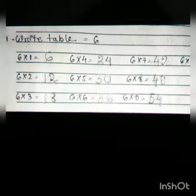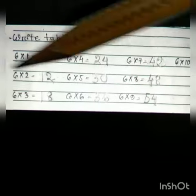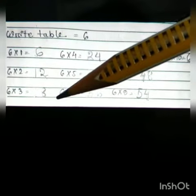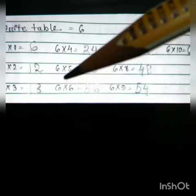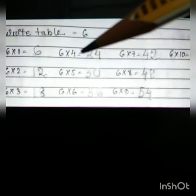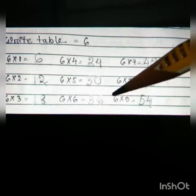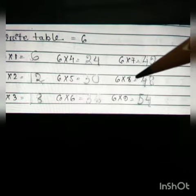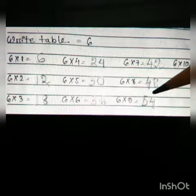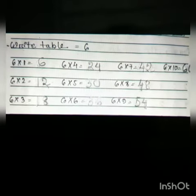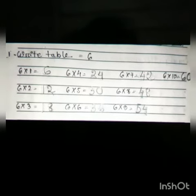We read it one more time. 6 ones are 6, 6 twos are 12, 6 threes are 18, 6 fours are 24, 6 fives are 30, 6 sixes are 36, 6 sevens are 42, 6 eights are 48, 6 nines are 54, 6 tens are 60. You have to by heart and write it also. Thank you.